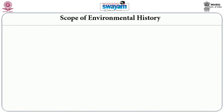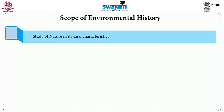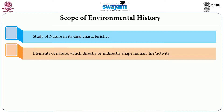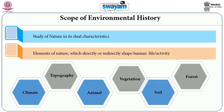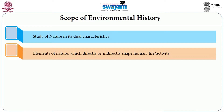One significant scope of environmental history is to study nature or ecology. But unlike ecological history, environmental history tries to study nature in its dual capacity. First, it tries to study the elements of nature which directly or indirectly shape human life or human activity. Environmental history focuses on climate, topography, animals, vegetation, soil, and forest, which either promote or prohibit specific forms of socio-cultural structures or economic organizations.